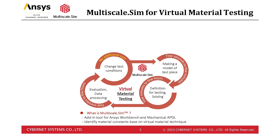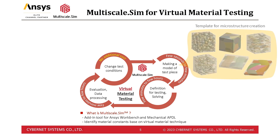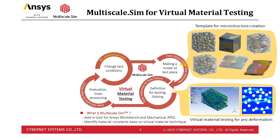Our original technology to perform virtual material tests in an easy way is a tool called Multiscale.sim, an add-in product to ANSYS Workbench. It provides various functions necessary to perform virtual material tests and obtain material properties. This analysis is broadly divided into four main phases, and our solution provides functionality for all of them. The first step is to create the microstructure model of the composites. Microstructures are often too complex to create manually, so Multiscale.sim provides templates to automatically create models based on geometrical information. The boundary conditions for conducting virtual material tests based on the unit cell model are very complex, so we provide the ability to create those boundary conditions automatically.